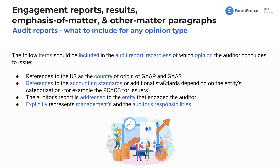This would be included because it's included in every type or garb. We could also see references to the accounting standards or additional standards depending on the entity's categorization — so if the PCAOB was involved, or the SEC, or if you're reporting for specific entities, that would be included as well. The auditor's report is addressed to the entity that engaged the auditor — who hired you. And it explicitly represents management's and the auditor's responsibilities, which is important to make sure each party takes responsibility for only what they had control over.